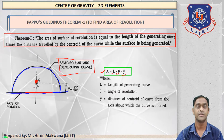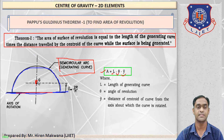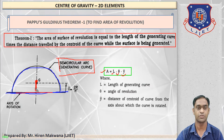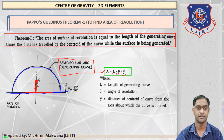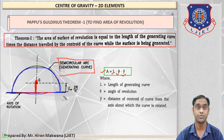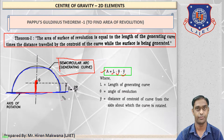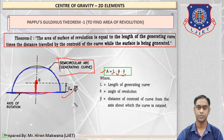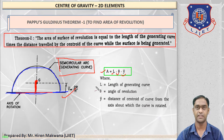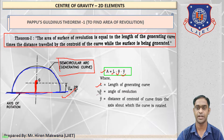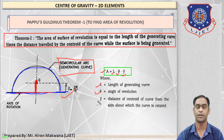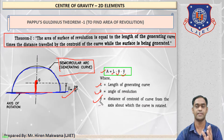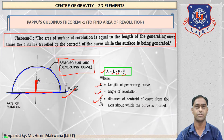As you can see in the figure, the center of gravity of the semi-circular arc is shown, and its distance to the bottom axis — the axis of rotation — is given by the formula ȳ = 2r/π. So L is the length of the generating curve, θ is the angle of revolution, and ȳ is the distance of the centroid of the curve from the axis about which the curve is rotated.